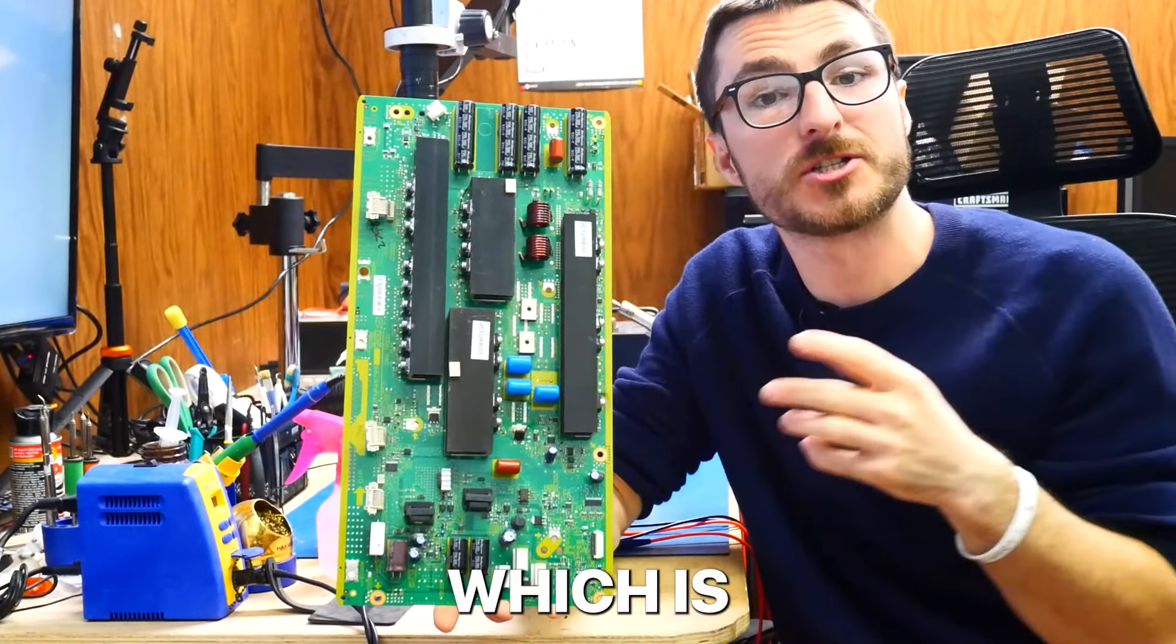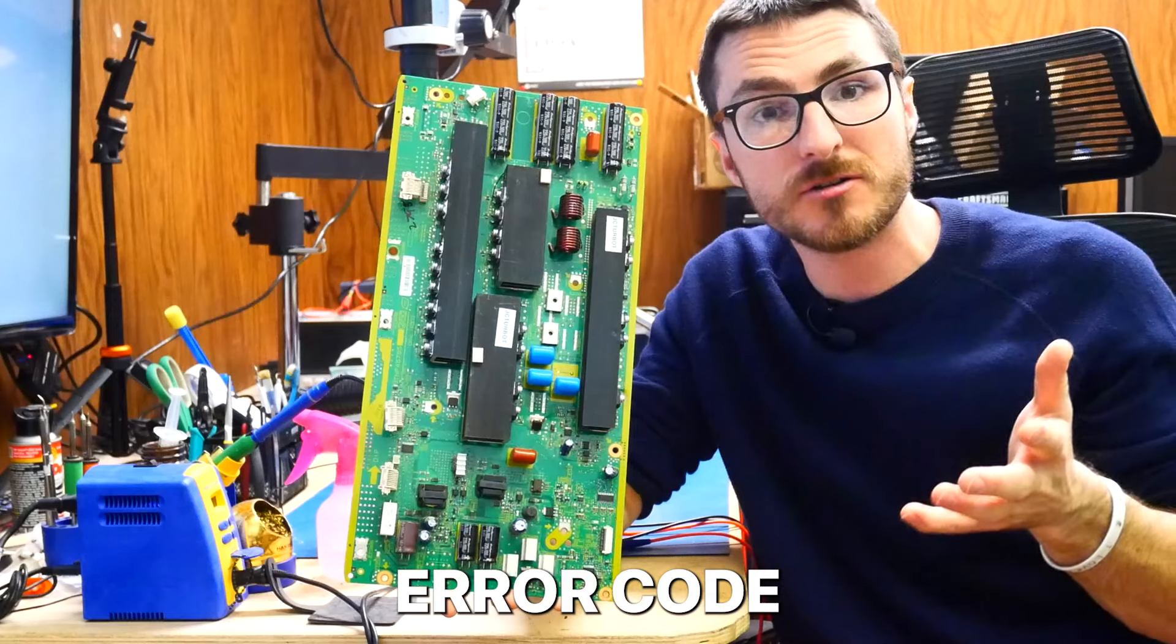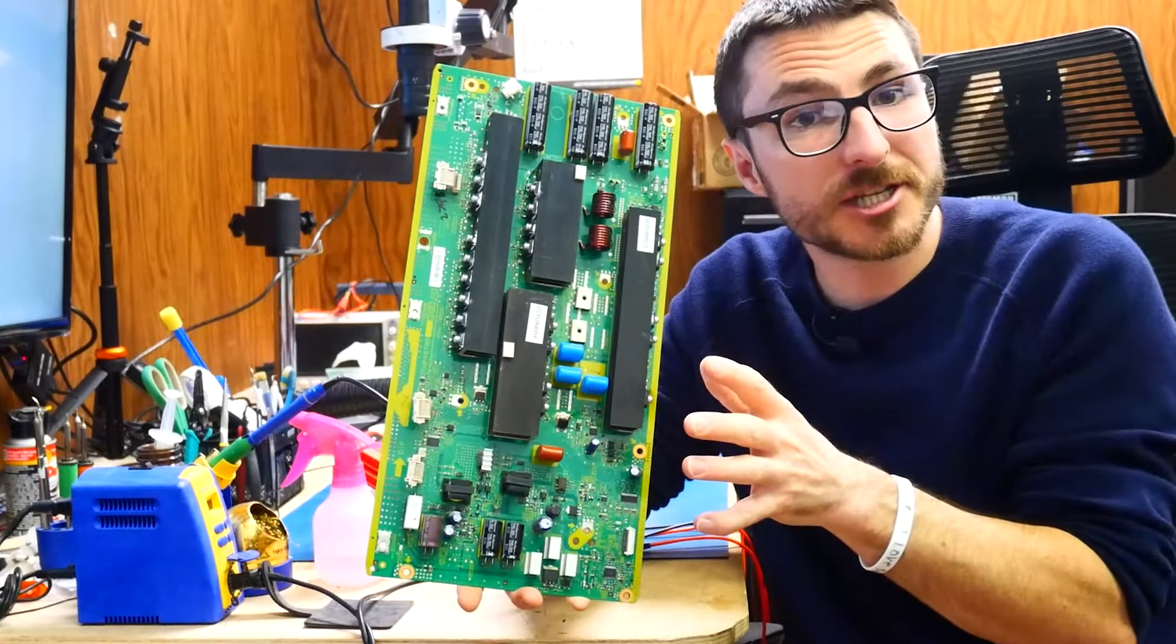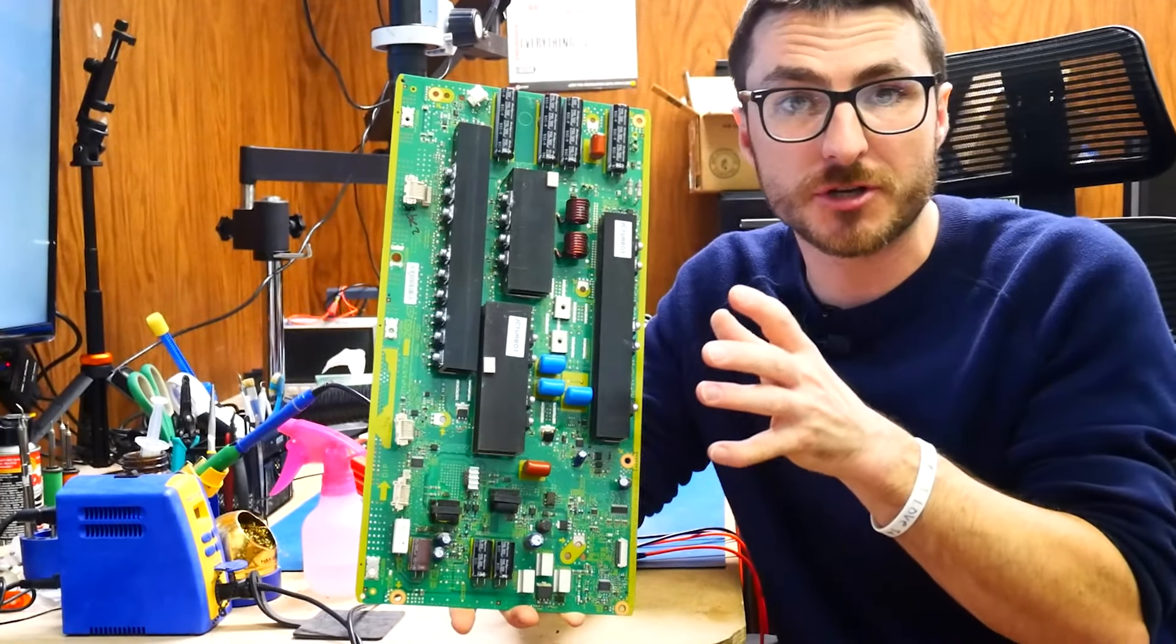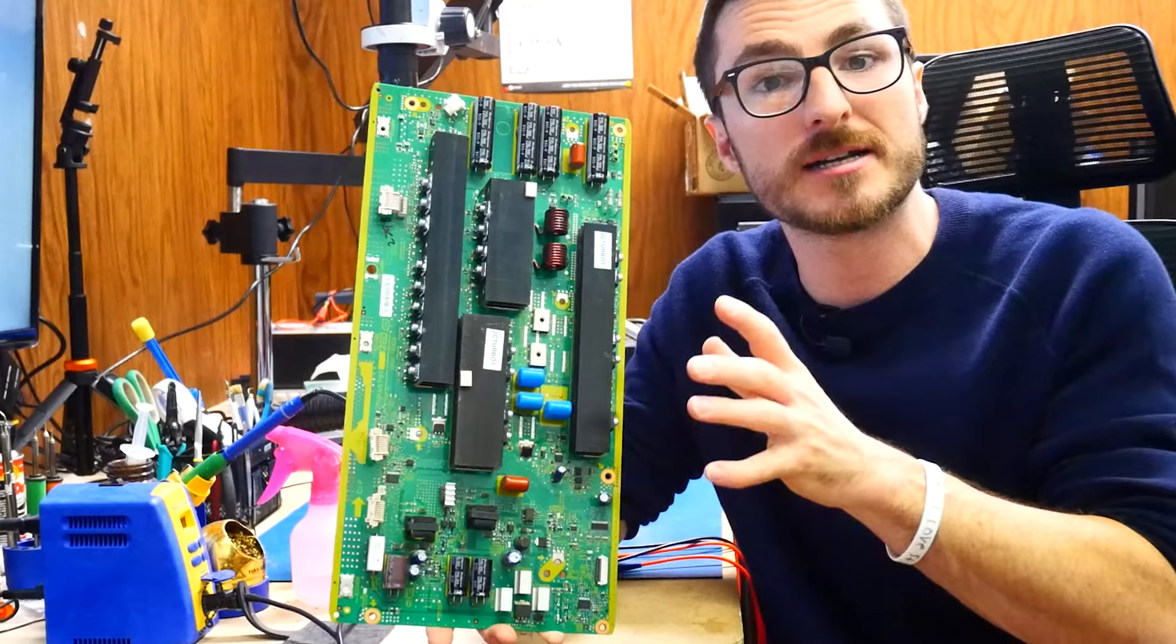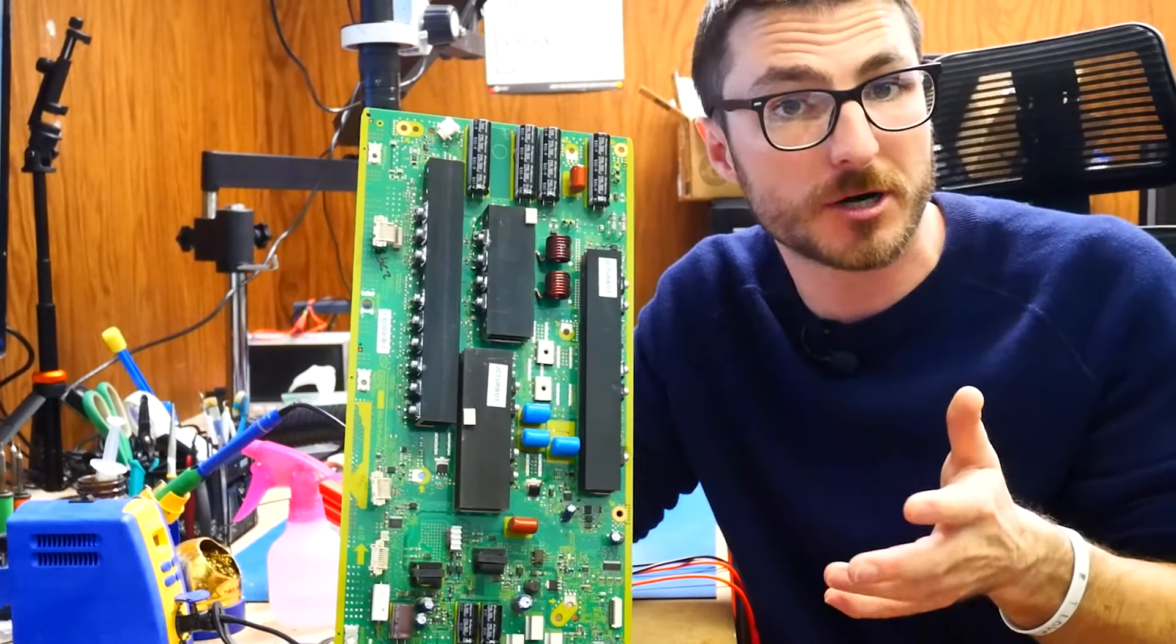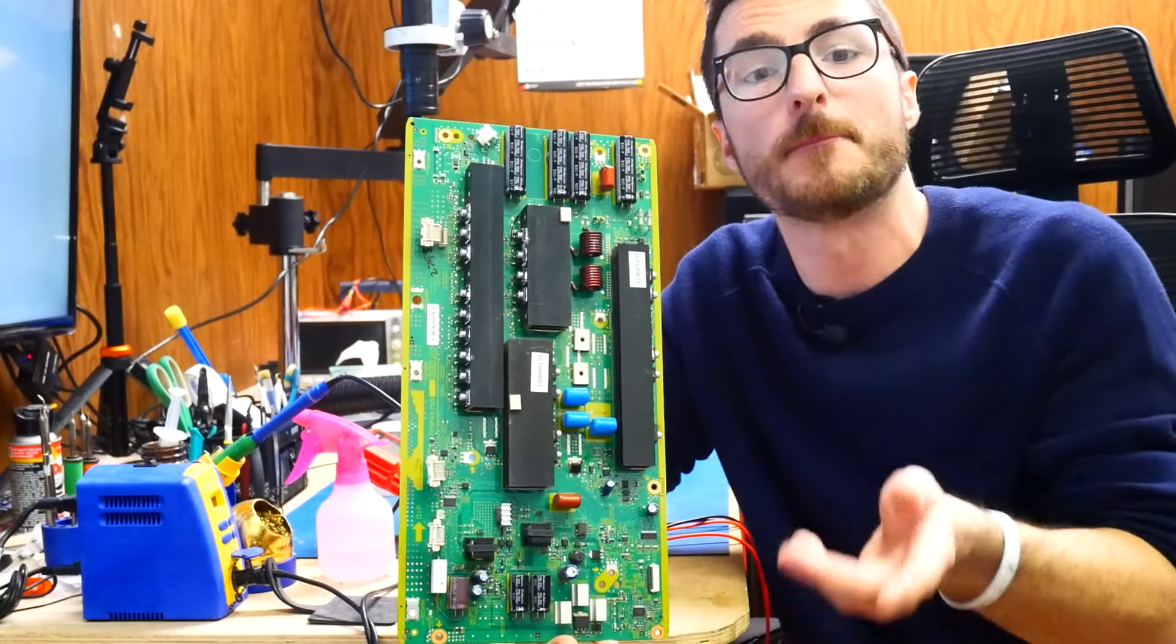I'm going to show you how to fix this SC board, which is experiencing a 7-blink error code. This is from a Panasonic Plasma with model number TC-P60VT60. I'm not actually going to plug it into the TV to show you it malfunctioning because I've already found some damage on it and I'd want to avoid damaging other parts in the TV, but we will live test it post-repair.